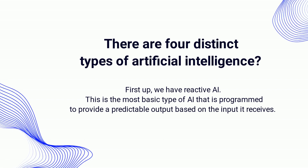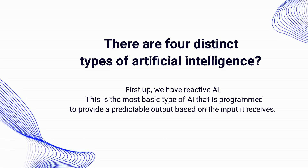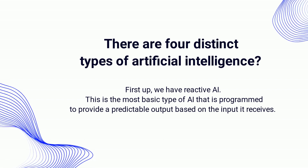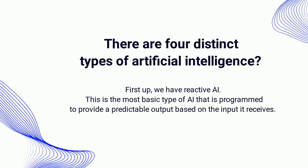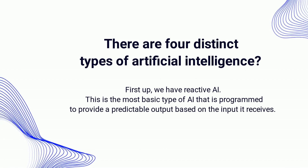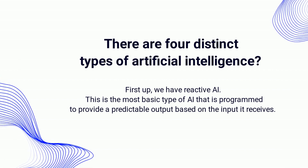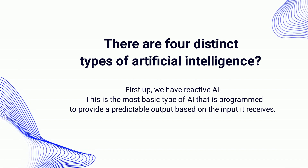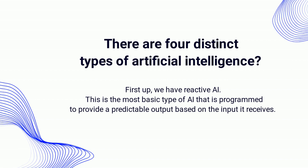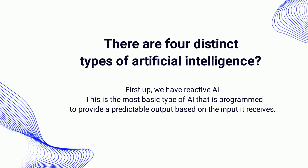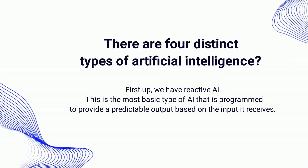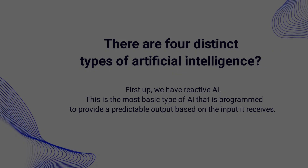First up, we have Reactive AI. This is the most basic type of AI that is programmed to provide a predictable output based on the input it receives. Examples of Reactive AI include spam filters and the Netflix recommendation engine.